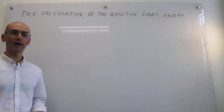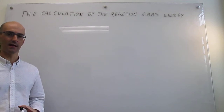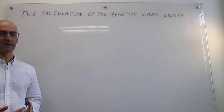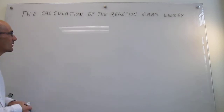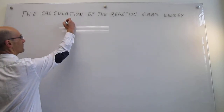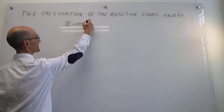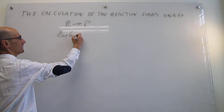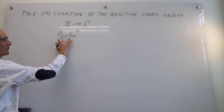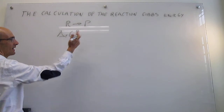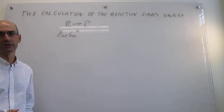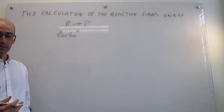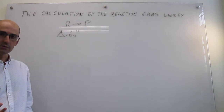In this video we review a couple of ways to calculate the change in Gibbs energy in a chemical reaction under standard conditions. Our goal is, for a given chemical reaction from reagents to products, to calculate the reaction Gibbs energy on a per mole basis under standard conditions, which is where thermodynamic data are generally provided. It turns out there are actually two ways to do this.